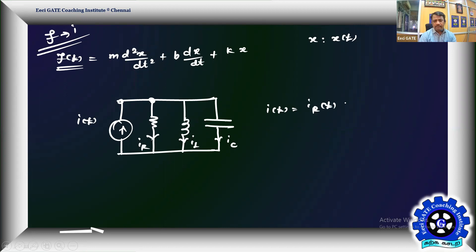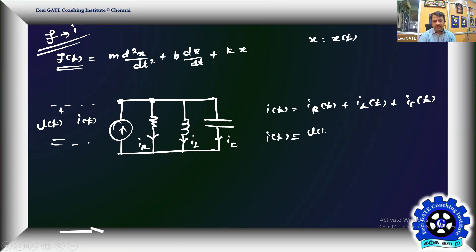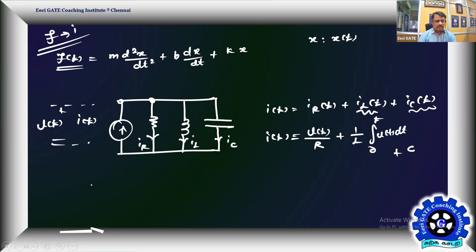For the parallel RLC, applying KCL: i(t) = i_R + i_L + i_C. Since all elements are in parallel, voltage V(t) is across each. So i(t) = V(t)/R for resistor current, plus (1/L)·∫V(t)dt for inductor current (assuming zero initial voltage at t=0), plus C·(dV/dt) for capacitor current, since q = C·V and current is the derivative of charge.